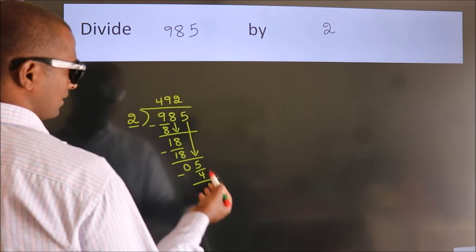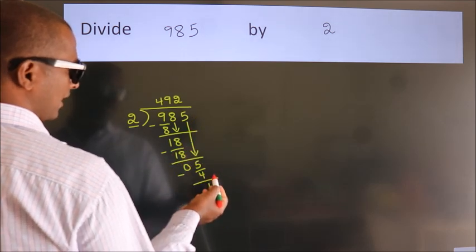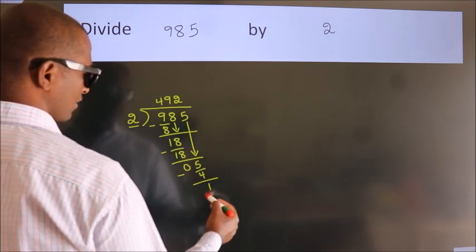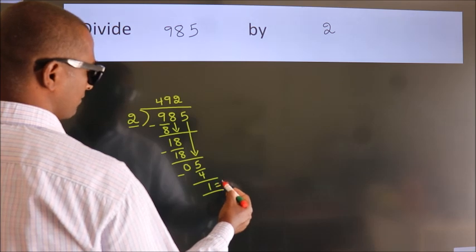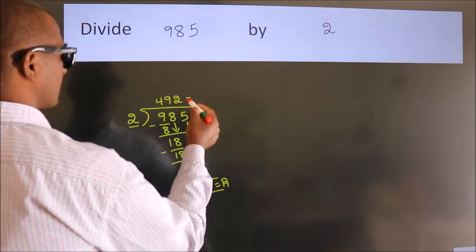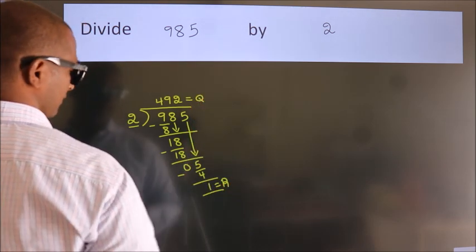After this, no more numbers to bring it down. So we stop here. This is our remainder. This is our quotient.